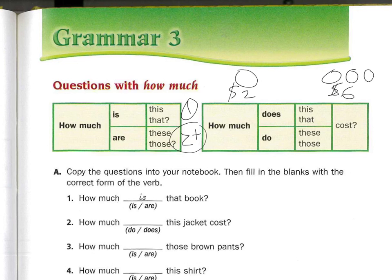How much is, how much are. We also have how much does and how much do. We know does is he, she, and it. How much does is something that's one thing. So how much does this one thing cost? And if it's two or more, how much do these cost? How much do those cost?